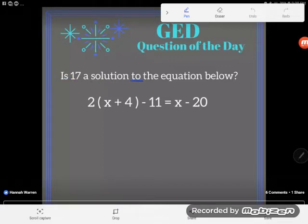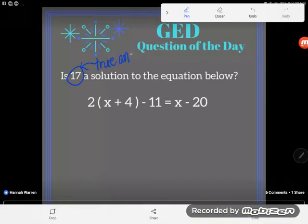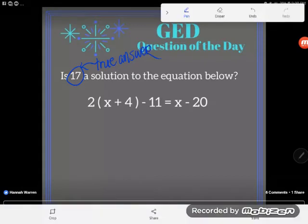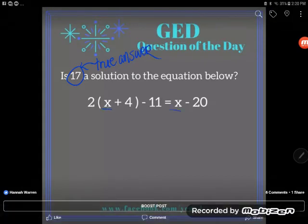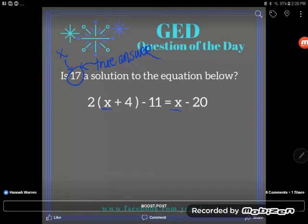The question asks: is 17 a solution to the equation below? A solution would mean that it's a valid true answer to replace the variable. In this case, if you look at this problem, the only variable I have, the only letters I have, are x's. So that would mean this 17 could be the x if it's a solution, and my equation would stay true.